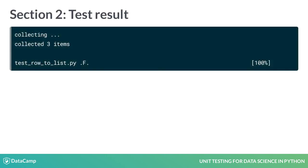The next bit is important. The output says 'collected three items', which means that PyTest found three tests to run. This is accurate, as the test module TestRowToList.py contains three unit tests.